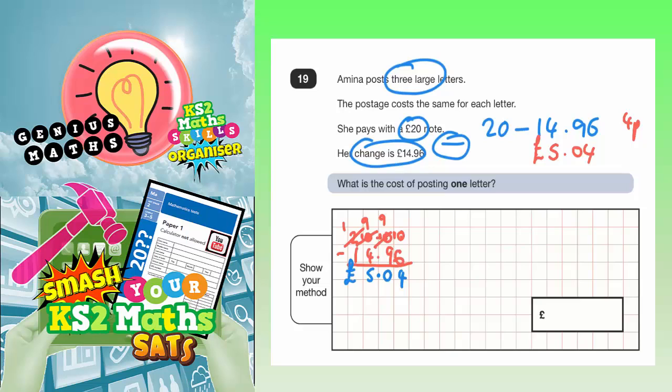But that's the cost for posting all three letters. We want the cost for one letter. So, this five pound and four, we need to share it or divide it by three to get one letter.